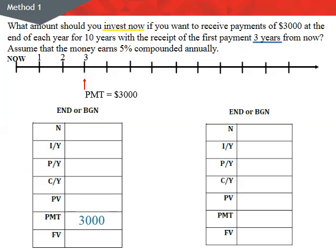We're having payments of $3,000 starting three years from now. So onto my timeline around year three, I can put payment number one of $3,000. This implies an annuity, so my first table is going to be an annuity calculation with $3,000 for the payment. The next thing is to decide whether to set my calculator to end or begin mode. It's given in the question that we're talking about end of each year for 10 years, so I'll set this up in end mode.